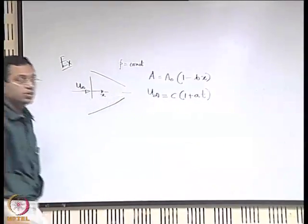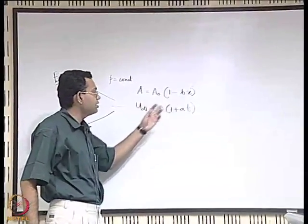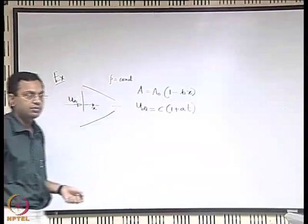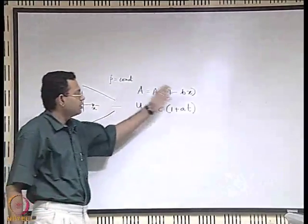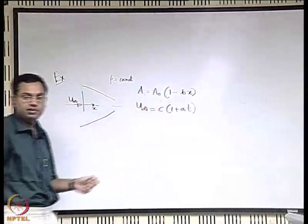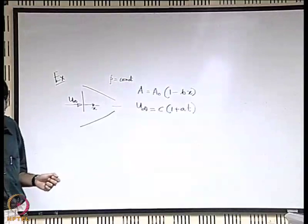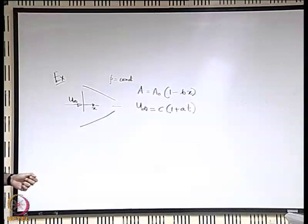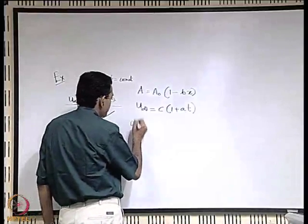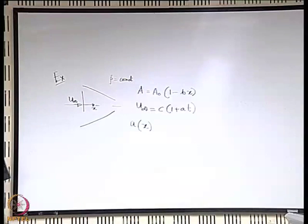Here a₀, b, c, and a are some given dimensional parameters to adjust the dimensions of the expressions. What we are asked to find out is the acceleration as a function of x.